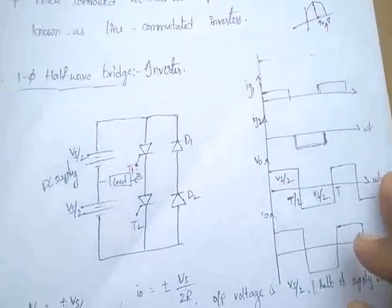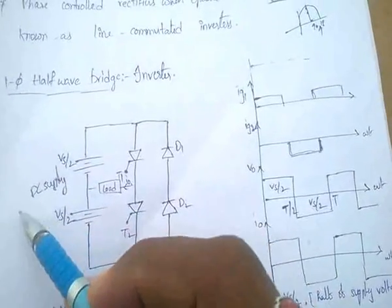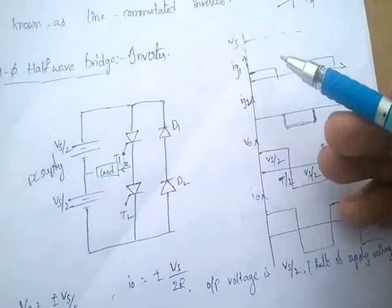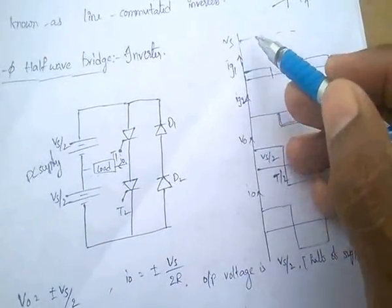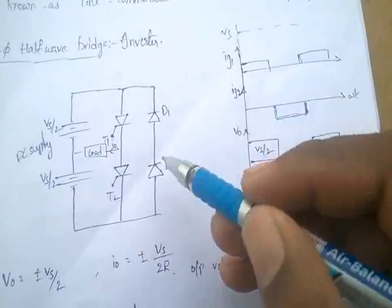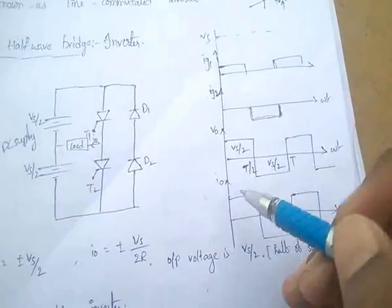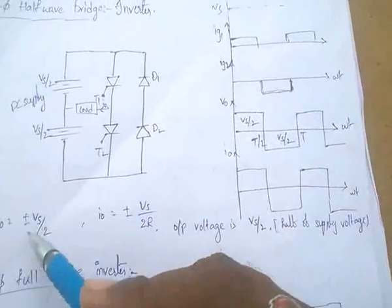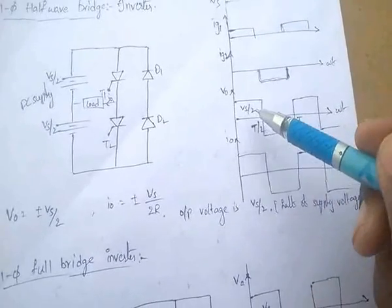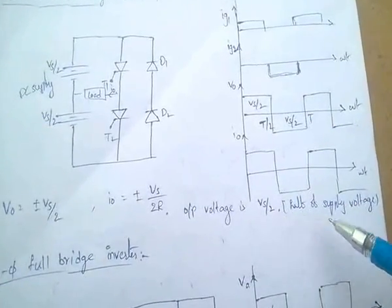Coming to the first one: single phase half-bridge inverter. Here the supply is DC. We can get AC output. The supply gives a gate signal and the output is VS/2. For the negative gate signal given to the second thyristor, the output is negative VS/2. In this way, V0 equals VS/2 and I0 equals V0/R, that is VS/2R. For every half cycle, the output voltage is VS/2, which is half of the supply voltage.